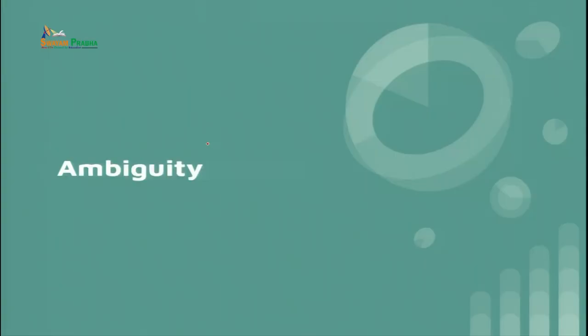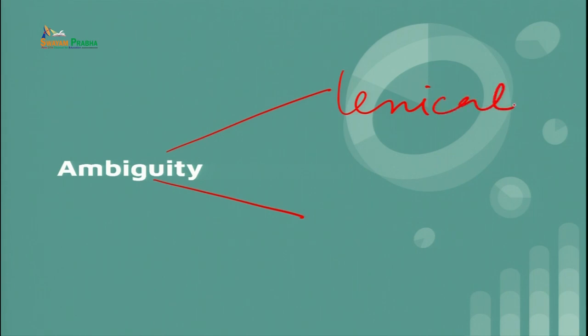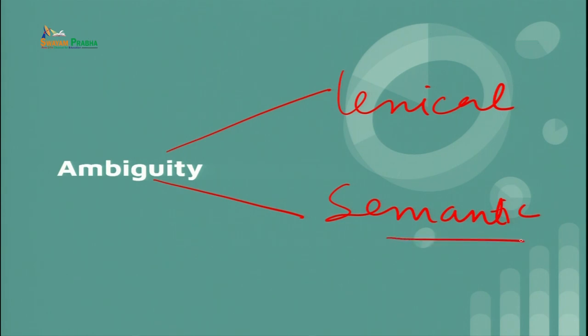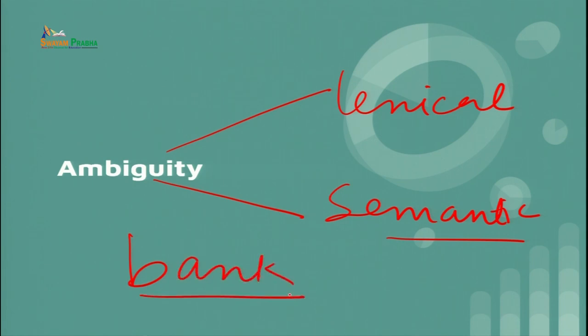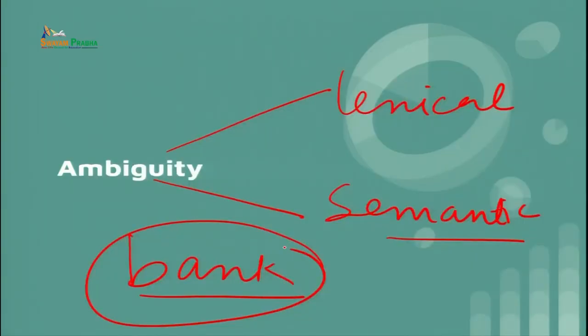Another important concept in syntax is ambiguity. We look at ambiguity through two lenses: lexical or morphological ambiguity, and semantic ambiguity. For example, the word 'bank' — you might think of a financial institution where you deposit and withdraw money, but 'bank' is also used to refer to the side of a river. If you use 'bank' in a specific context, you need to make sure it is not creating confusion or leading to more than one meaning.